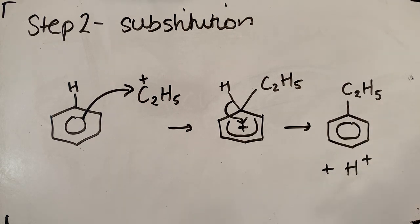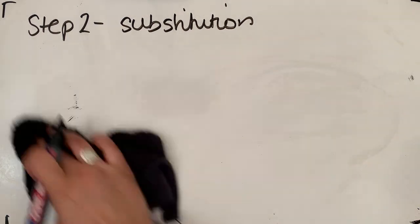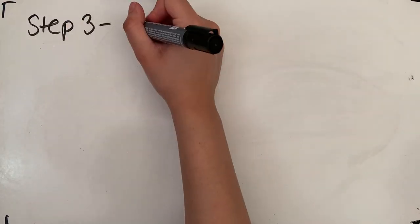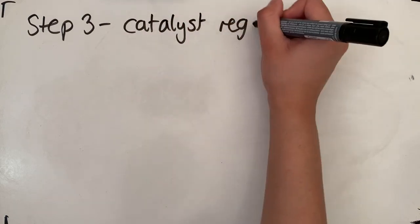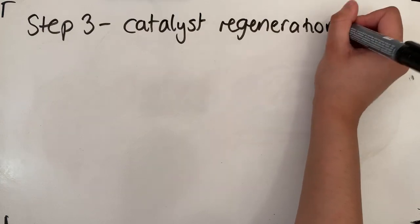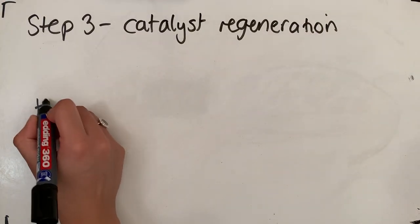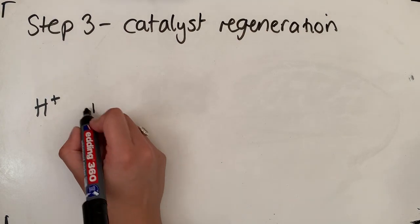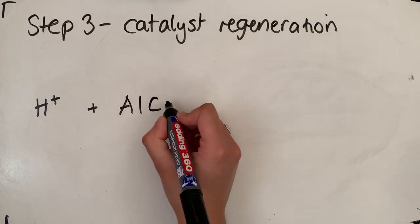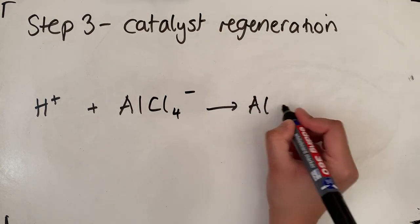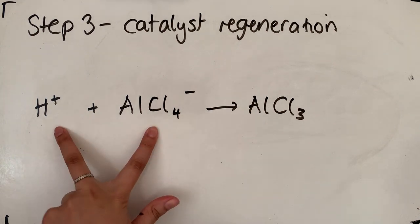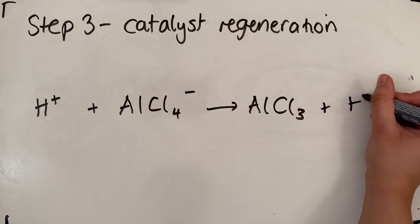So step three, catalyst regeneration. So we've got our H+ from step two. At the end of step one, we also formed AlCl4-. So that's going to regenerate our AlCl3, which is our catalyst. And we also then form HCl.